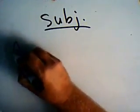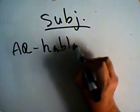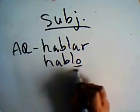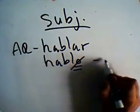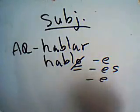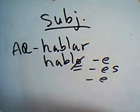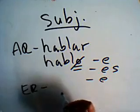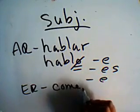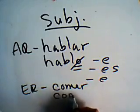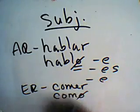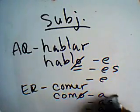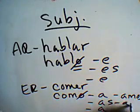For a typical AR verb like hablar, we form the subjunctive by taking the yo form of the present indicative, removing the -o, and adding endings that go with the opposite type of vowel: hable, hables, hablemos, etc. Likewise for an ER verb like comer — same process: take the first person present indicative, eliminate the final -o, and add the opposite-class vowel endings: comamos, coméis, etc.